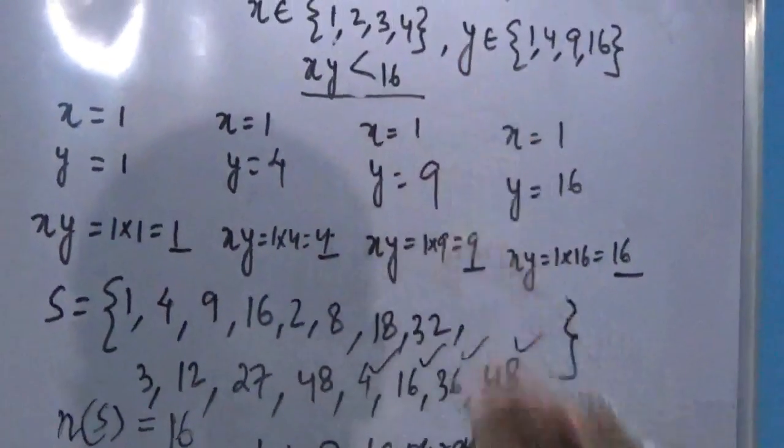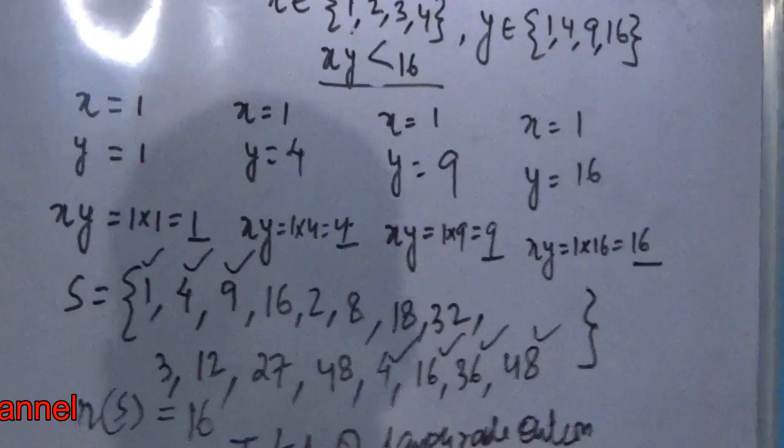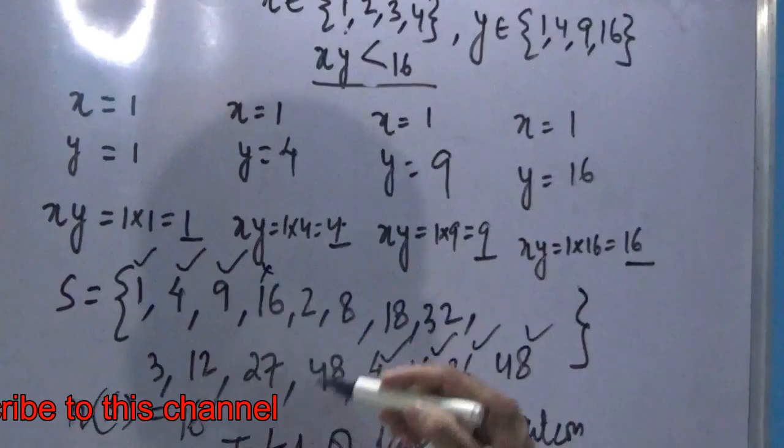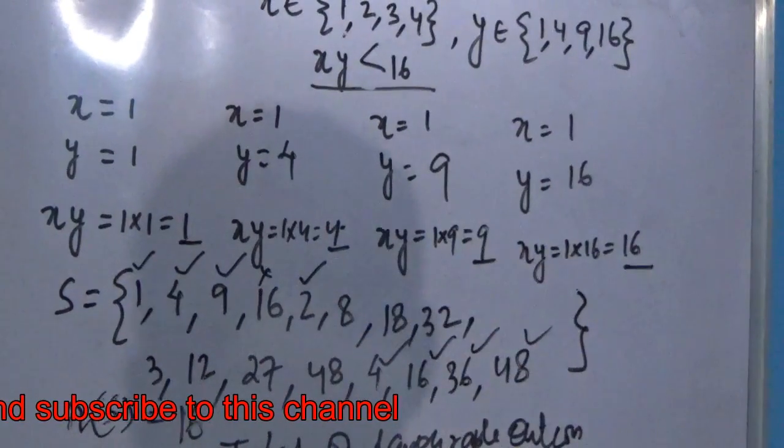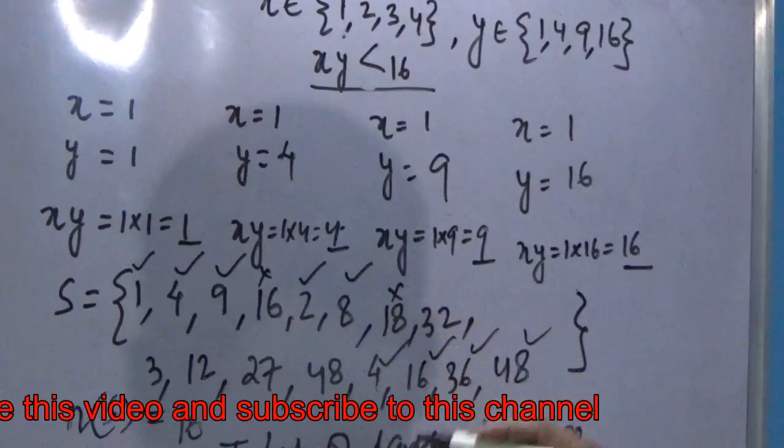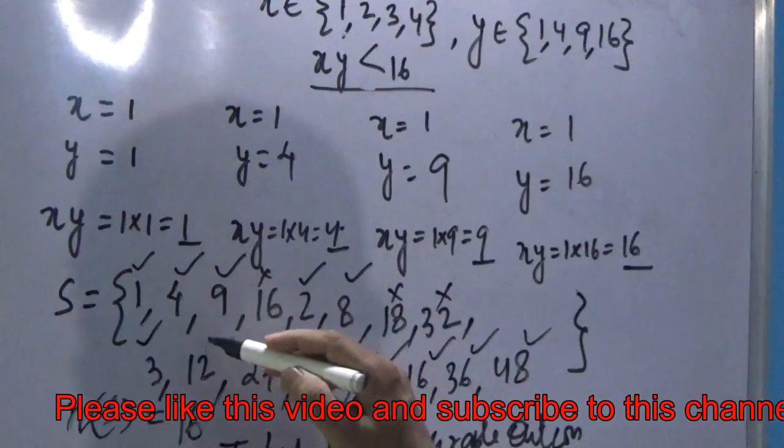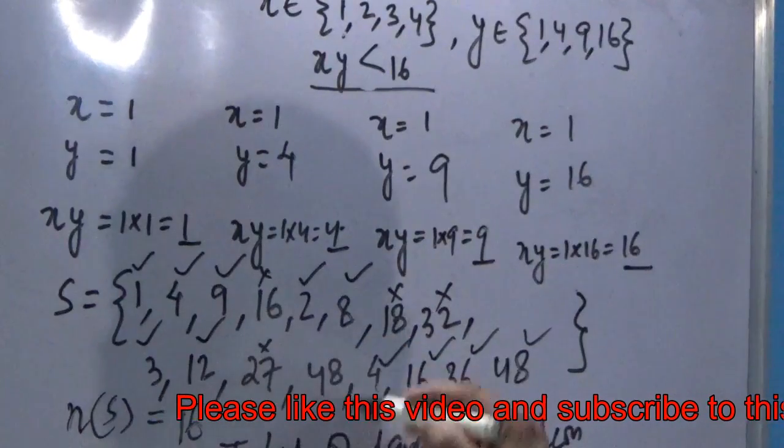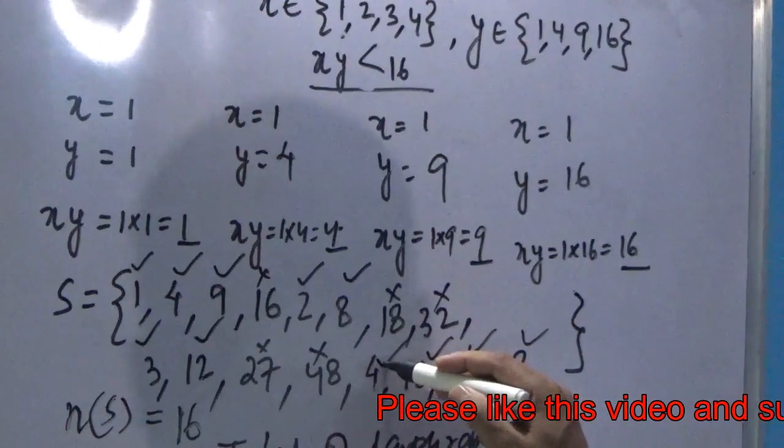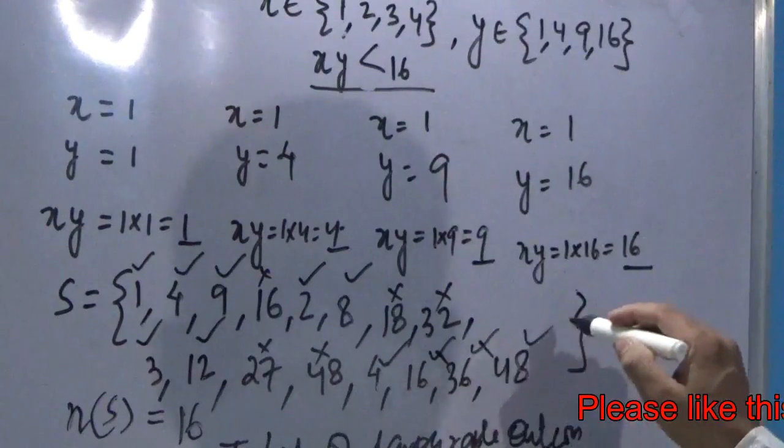Is 1 less than 16? Yes. Is 4 less than 16? Yes. 9 less than 16? Yes. Now 16 is not less than 16, so we cannot take it. Again 2 less than 16? Condition is favorable. 8? It's alright. 18? We cannot take. 32? We cannot take. Again 3? Alright. 12? It's also fine. 27? We cannot take. 48? Again, not possible. 4? We can take. 16? We cannot take. 36? We cannot take. 48? We cannot take.